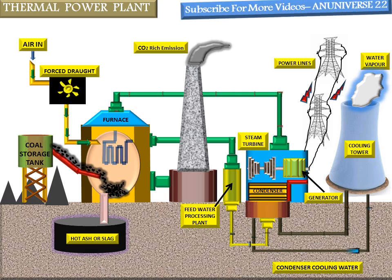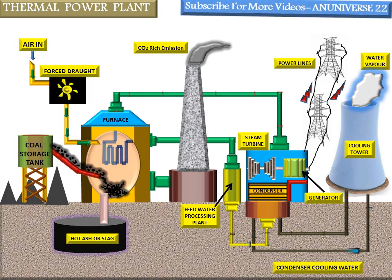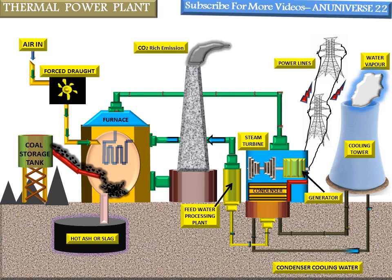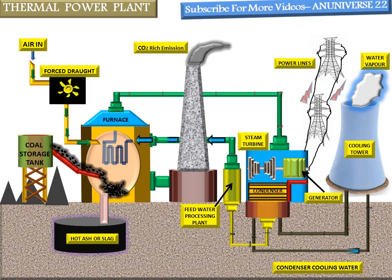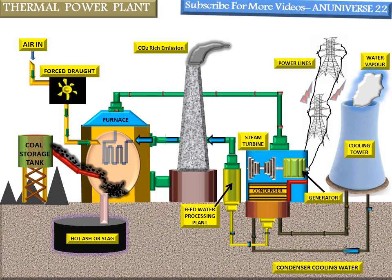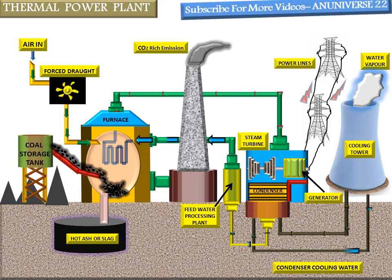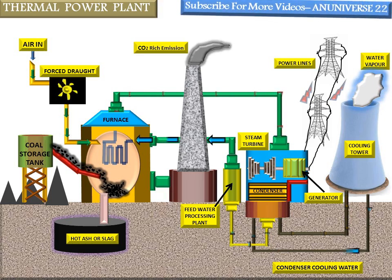When cooling water coming out of the condenser is cooled again and supplied back to the condenser, the system is known as the closed system. When water coming out from the condenser is discharged to the river directly, the system is known as the open system. In this video we can see the closed system, where water is recycled again and again from condenser to cooling tower and back. There is CO2-rich emission coming out from the chimney, water vapors from the cooling tower, and with the help of power lines, electricity generated by the generator is supplied to the grid. This is the whole arrangement of the thermal power plant.